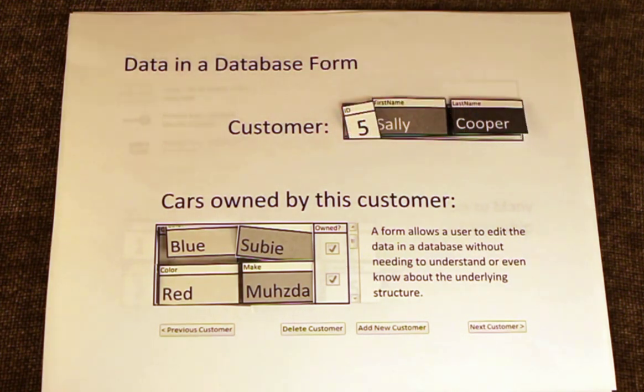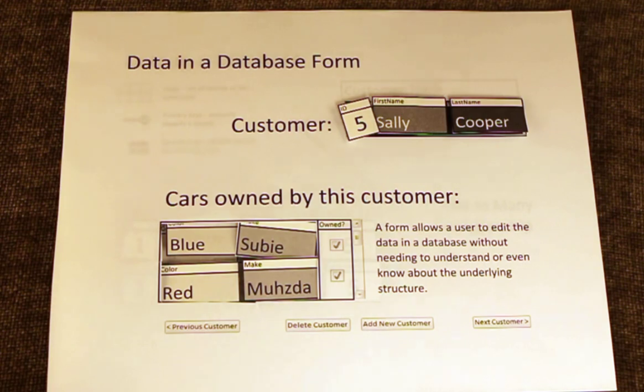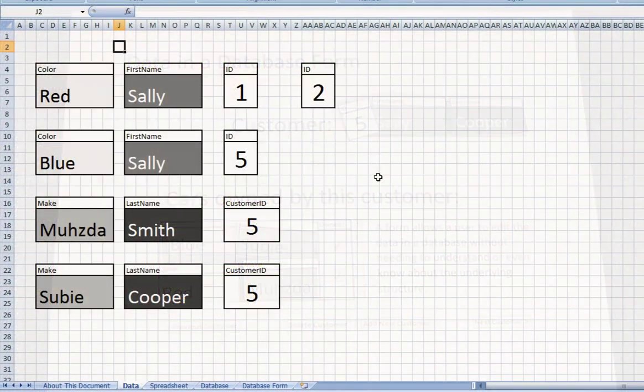So while a database does add more complexity, these structures and rules help keep the data valid, and database forms hide the complexity, managing data for us behind the scenes.